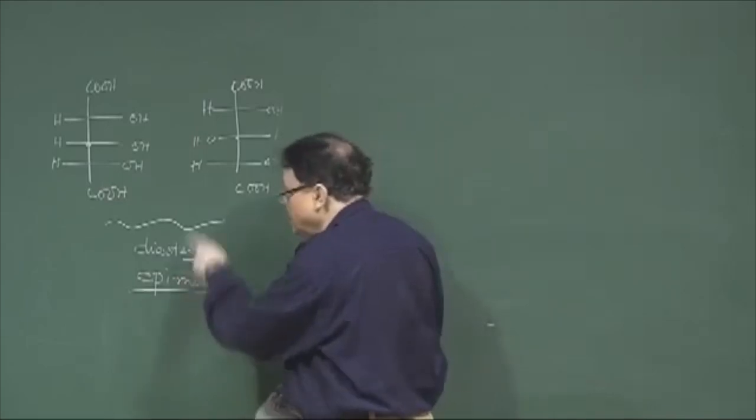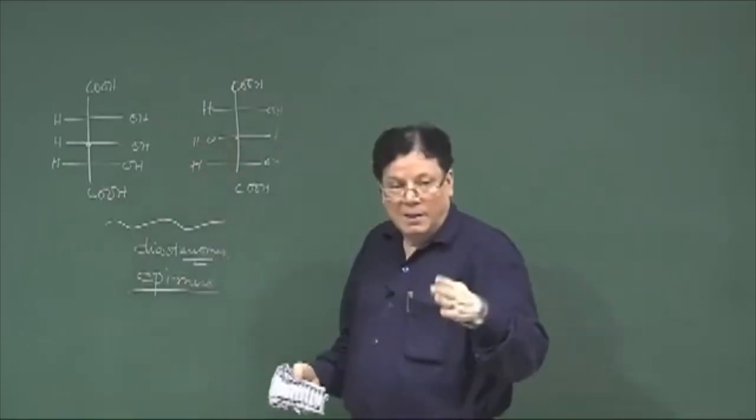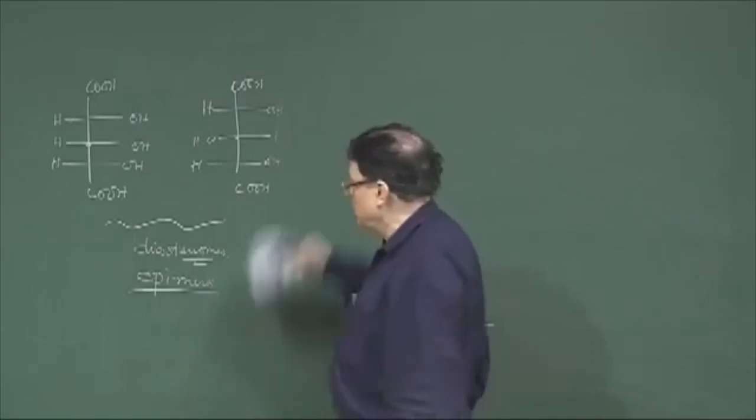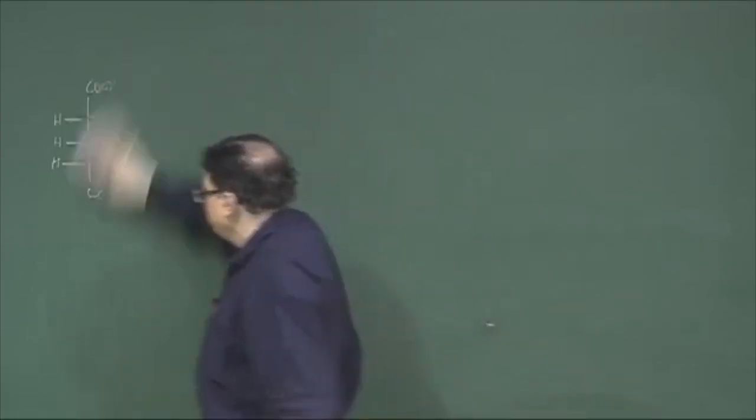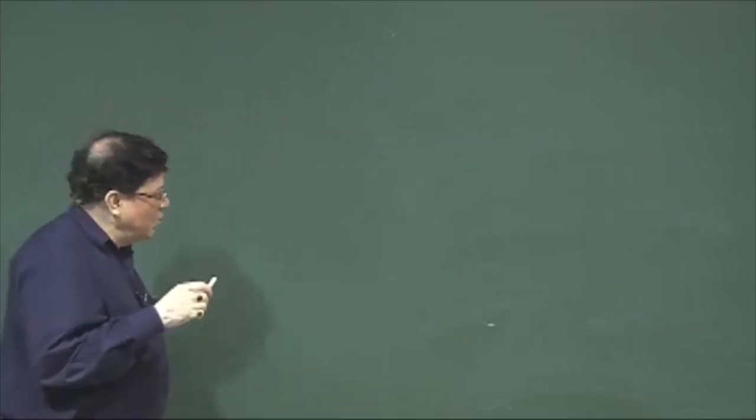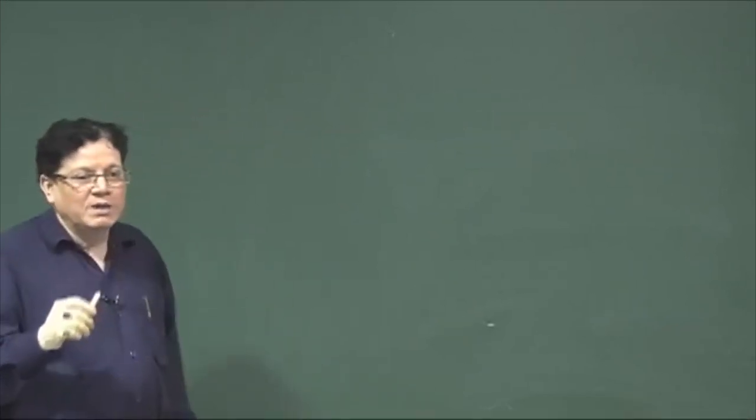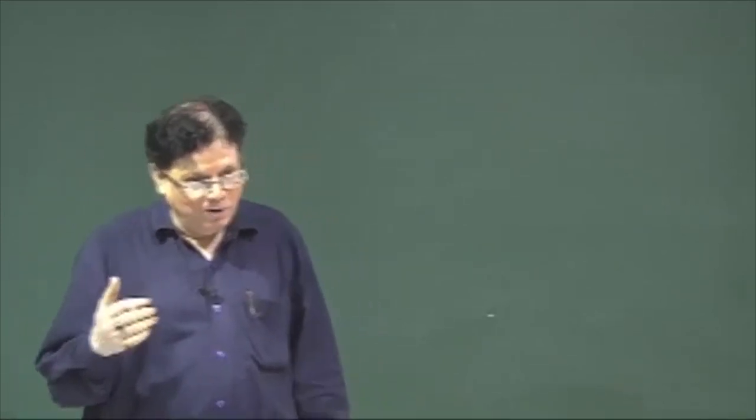So basically now we have in isomerism: homomers which are basically the same molecules, then constitutional isomers, then stereoisomers, and in the stereoisomers we have different classes — enantiomers and diastereomers. Epimers arise only in cases of molecules where there are multi-stereogenic centers present. Now let us go into the nomenclature system of stereoisomers. How do we introduce the nomenclature system and why is it required in case of stereoisomers?